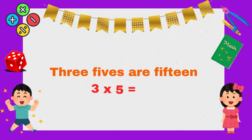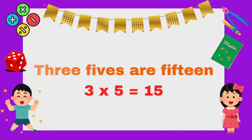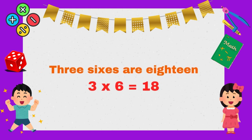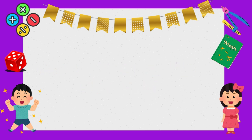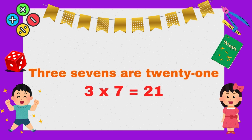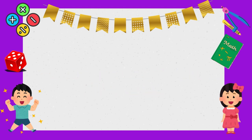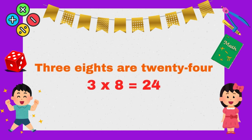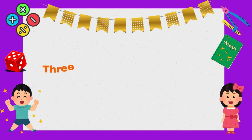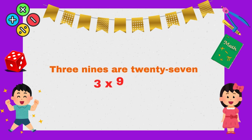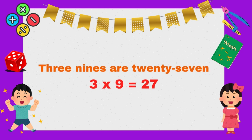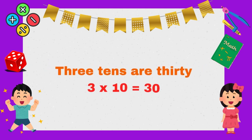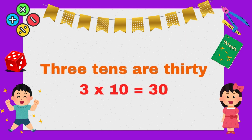Three fives are fifteen. Three sixes are eighteen. Three sevens are twenty-one. Three eights are twenty-four. Three nines are twenty-seven. Three tens are 30.